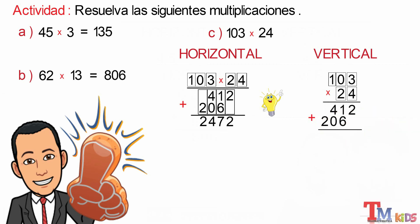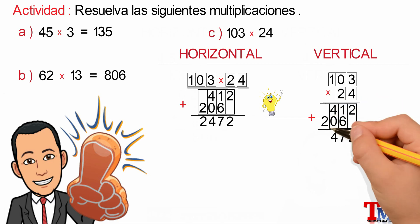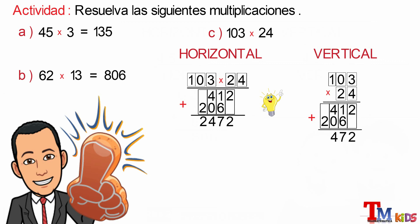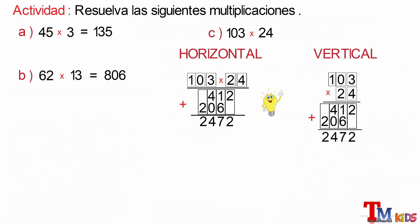Adding: the first column is 2 plus 0 equals 2. Continuing with the next column: 1 plus 6 equals 7. The next column: 1 plus 2 equals 4. Lastly, the space in white, the same as having a 0, plus 2 equals 2, and this would be the final result.